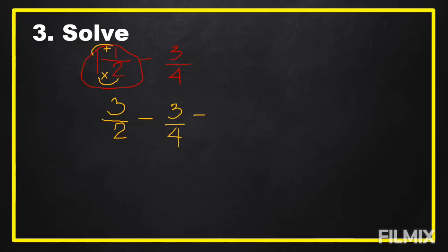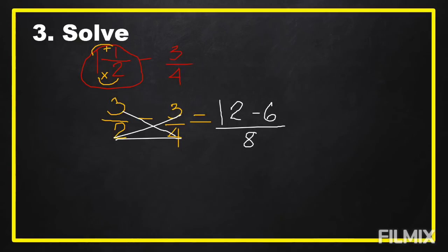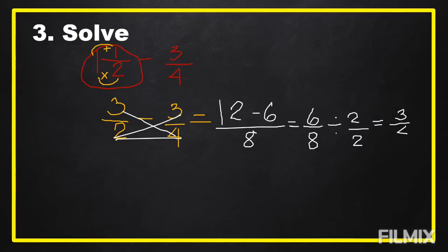Then we subtract: three over two minus three-fourths. Using the cross-product method: three times four equals twelve, minus two times three equals six, over two times four equals eight. Subtracting the numerators: twelve minus six equals six over eight. The GCF of six and eight is two. Six divided by two equals three, eight divided by two equals four. Our answer is three-fourths.